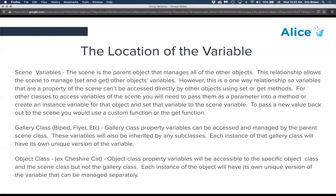To pass data back out to the scene level, you can create custom functions or use the get functions — for example, 'get alien property variable.' Gallery class property variables can be accessed and managed by the parent scene class. These variables are also inherited by any subclasses, and each instance of the gallery class will have its own unique version of the variable.